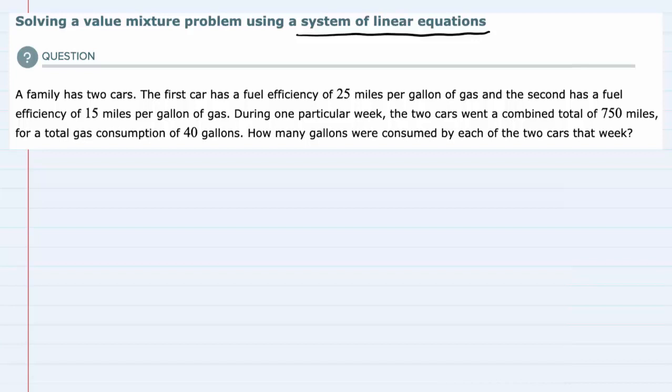Reading the problem: A family has two cars. The first car has a fuel efficiency of 25 miles per gallon of gas, and the second has a fuel efficiency of 15 miles per gallon of gas. During one particular week, the two cars went a combined total of 750 miles for a total gas consumption of 40 gallons. How many gallons were consumed by each of the two cars that week?